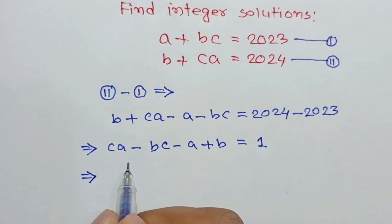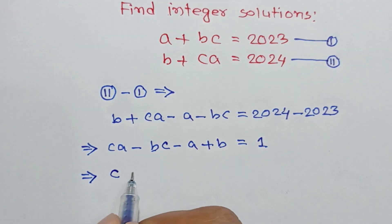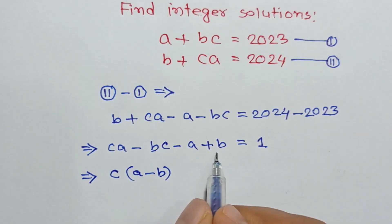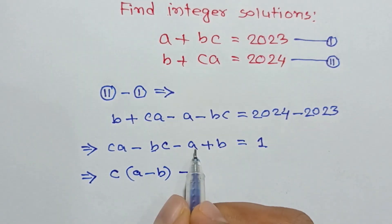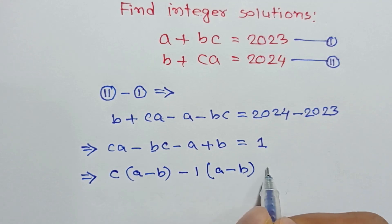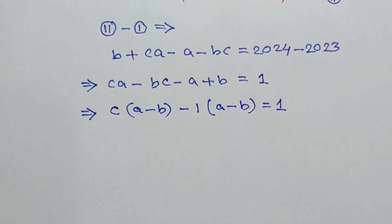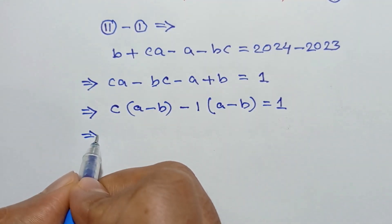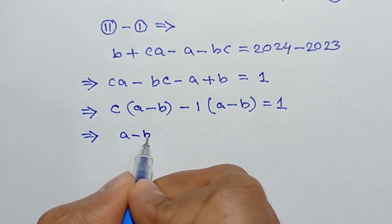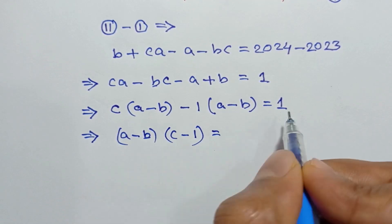If we take c common from the first two terms we get c times (a minus b), and taking negative one common from the last two terms we get negative one times (a minus b), which equals one. Taking (a minus b) common, we have (a minus b) times (c minus one) is equal to one.